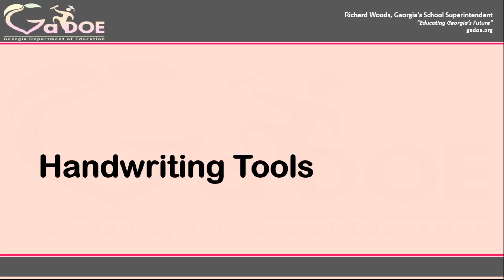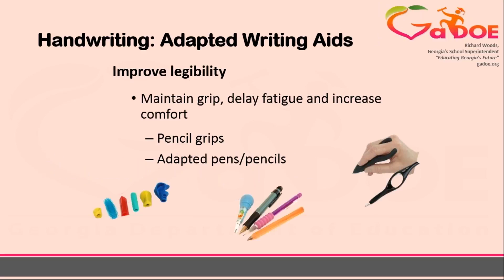First, let's look at a few tools that will support a student with their handwriting tasks. For students that experience difficulty with the physical act of writing, technology as simple as pencil or pen grips or adapted pencils may be enough support to allow the student to complete their writing assignment. Working with the student's occupational therapist can help to determine if these tools would benefit your students.